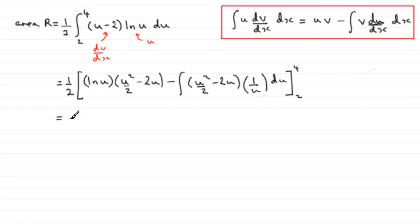So what I'd want to do next is just clean this up. For this first term I think I'd write U squared over 2 minus 2U first of all, so we've got U squared over 2 minus 2U multiplied by the natural log of U.